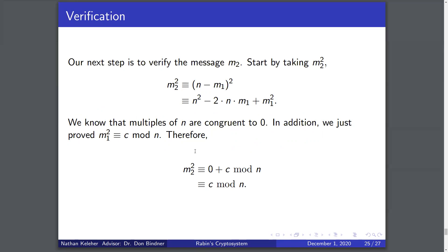For M2, we take M2² = (N − M1)² = N² − 2N·M1 + M1². Since N ≡ 0 mod N and M1² ≡ C mod N, we see M2² ≡ C mod N, so M2 is also a potential plaintext candidate. Similarly, we can show that M3 and M4 are potential plaintext candidates — the proofs are very similar to those for M1 and M2 and are shown here.